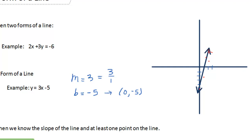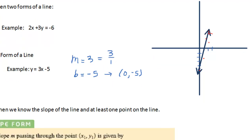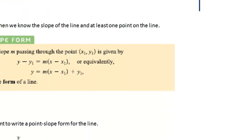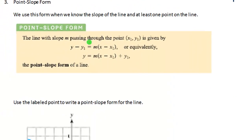Today we are going to talk about point slope form. Point slope form is used when we know the slope of the line and at least one point on the line. Sometimes all the information you have about the line is the slope and one of the points, and it may not be the y-intercept. That is when point slope form is a good form to use.